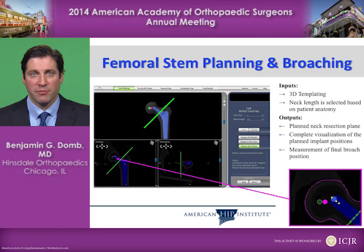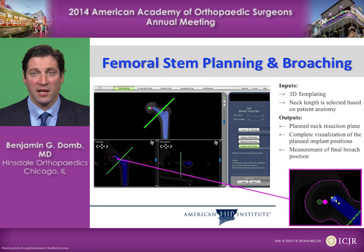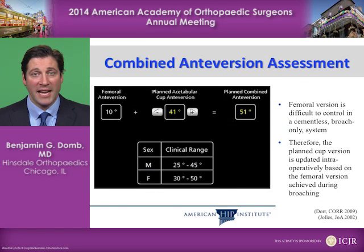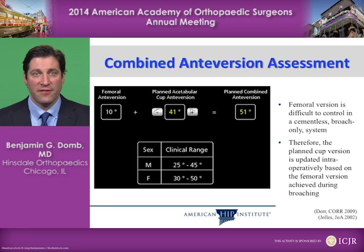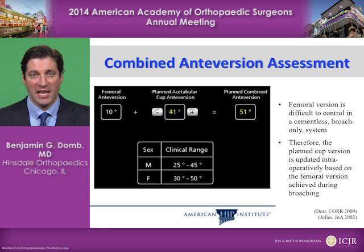In terms of planning the stem, we use the same inputs. We plan the height and offset of the stem to reproduce the desired leg lengths and offset. We can assess the combined anteversion measurement, and if the femoral version is very low — or if it's a retroverted femur — we may want to increase the acetabular cup version to compensate.